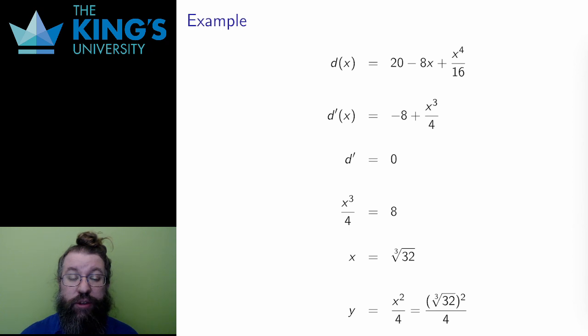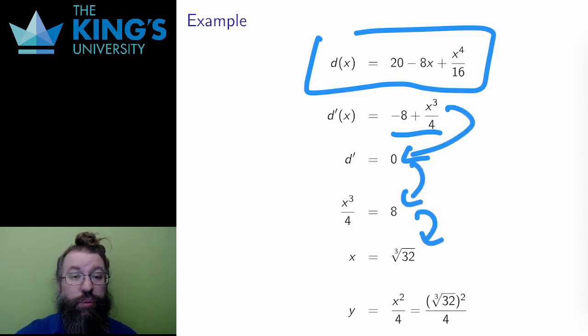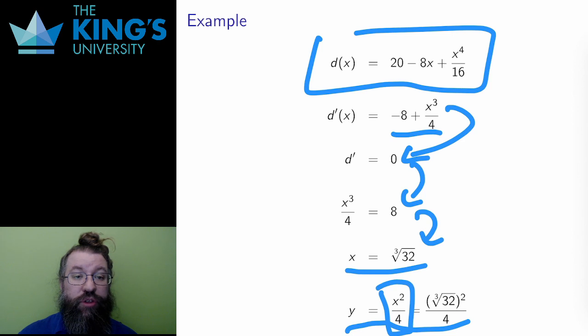To optimize, I take the derivative, which is negative 8 plus x cubed over 4. And I set this equal to 0 and solve, and doing this leads to x equals the cube root of 32. Then the matching y value is given by the locus equation. y equals x squared over 4, which is the square of the cube root of 32 over 4.